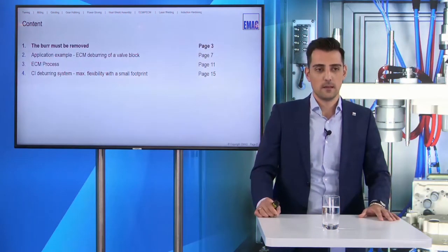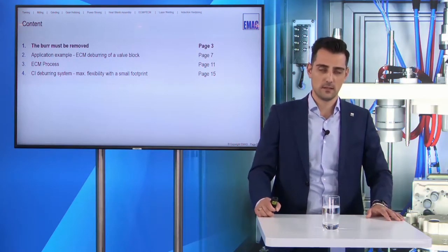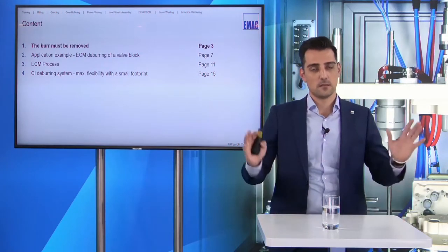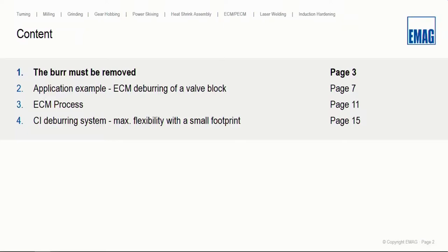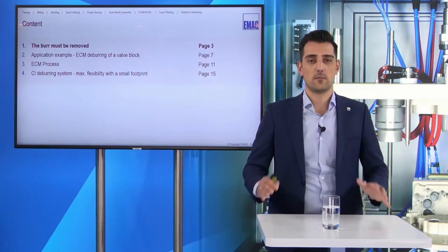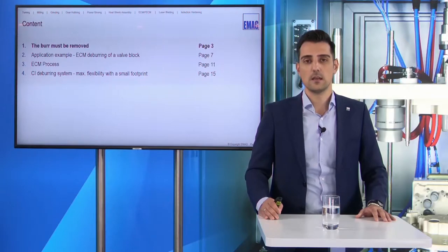But first of all, we start with the burr discussion: what is a burr, and why must it be removed? Then we go directly to a practical example — the application of ECM deburring of a valve block. Then I will talk about the ECM process, the two colors, and the essential components in the process. Then our solution, our CI deburring system, with all the facts about working tools.